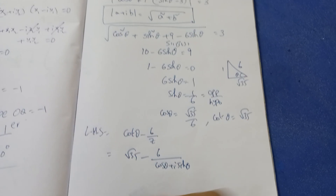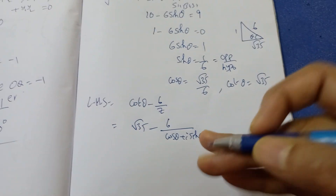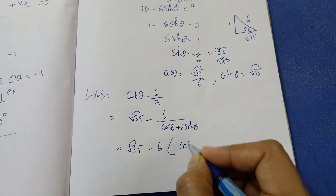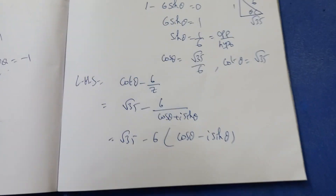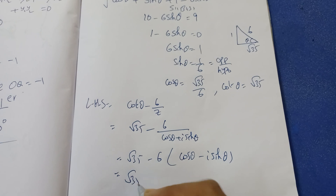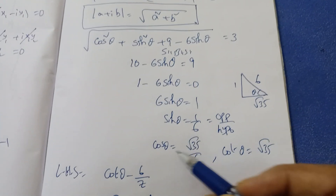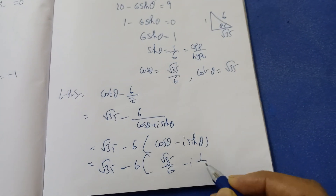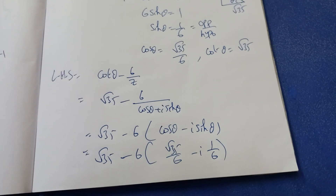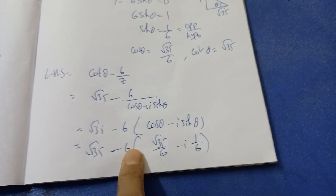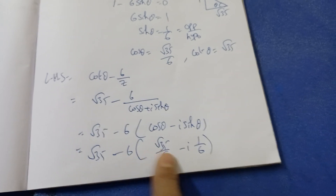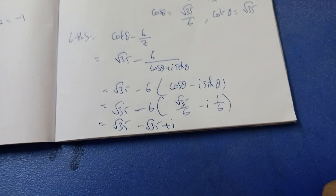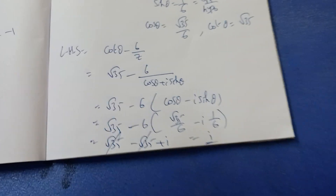6/(cosθ + i·sinθ) = 6(cosθ − i·sinθ). Substituting cosθ = √35/6 and sinθ = 1/6: this becomes 6·(√35/6) − 6·i·(1/6) = √35 − i. So LHS = √35 − (√35 − i) = √35 − √35 + i = i. LHS = RHS = i. Proved!